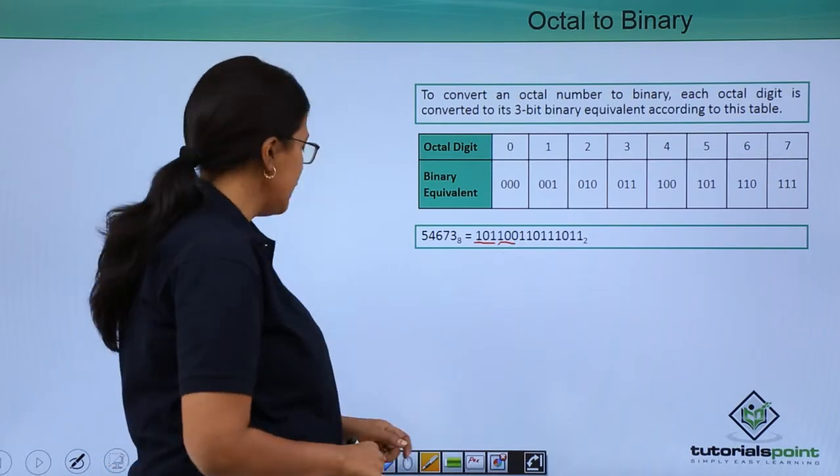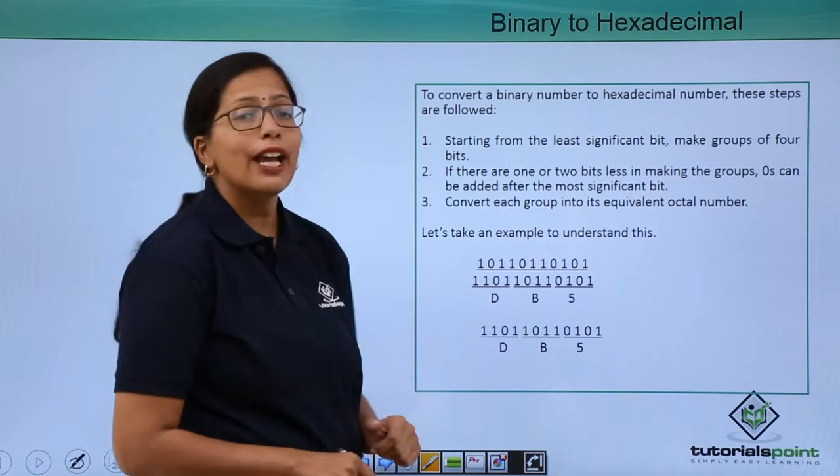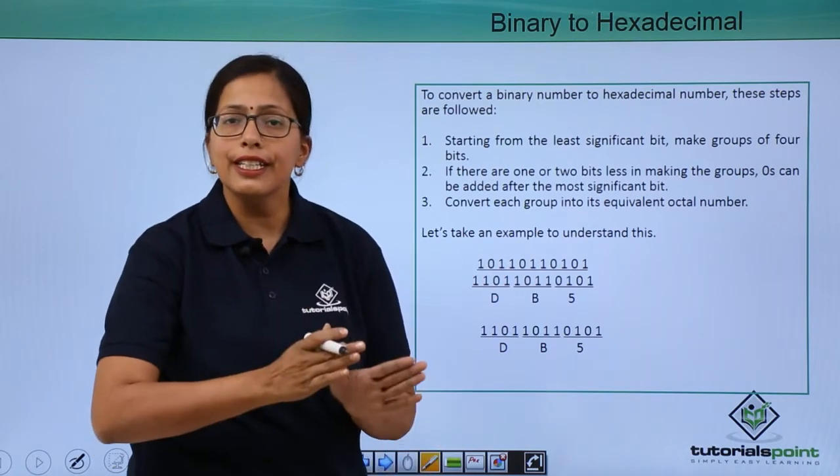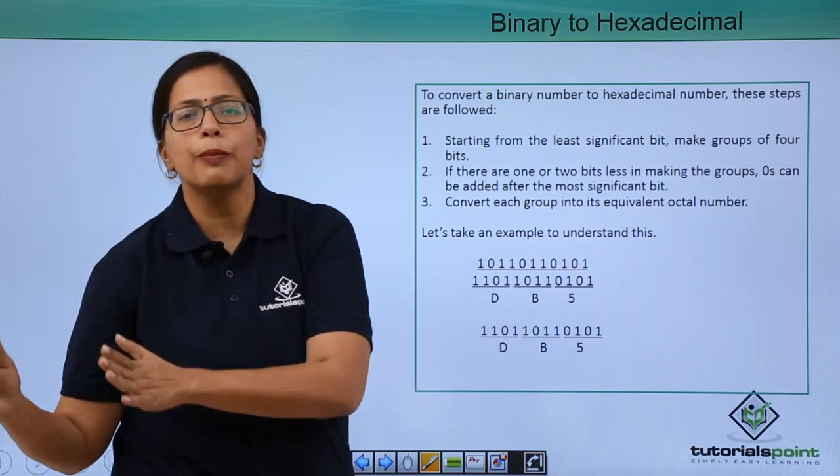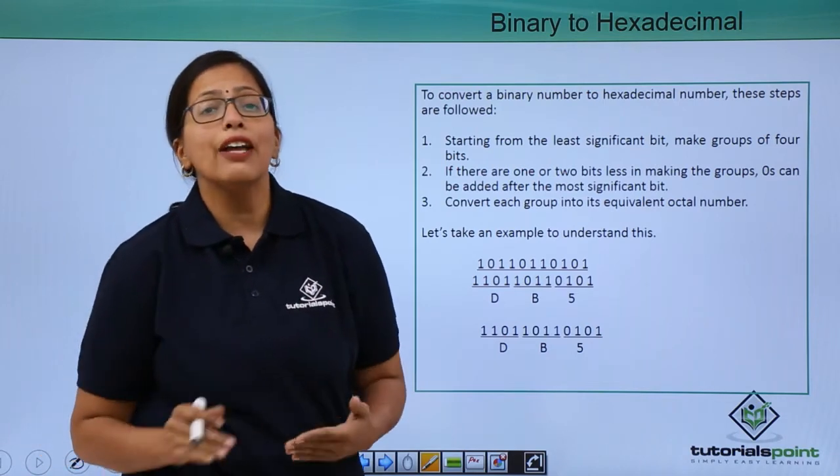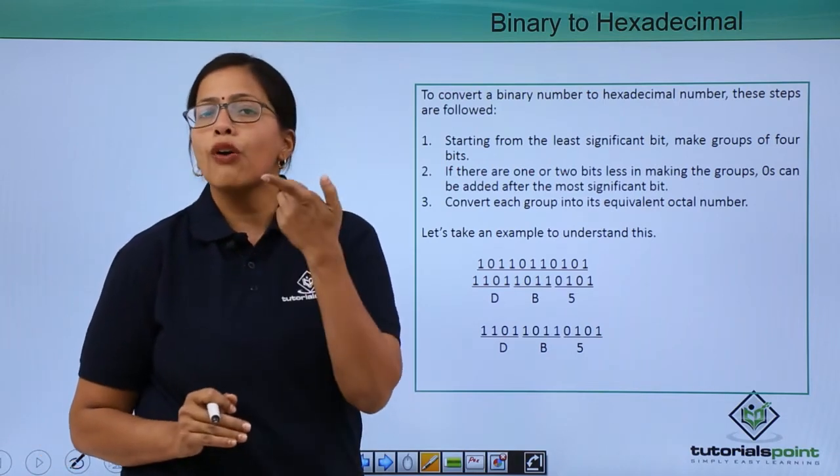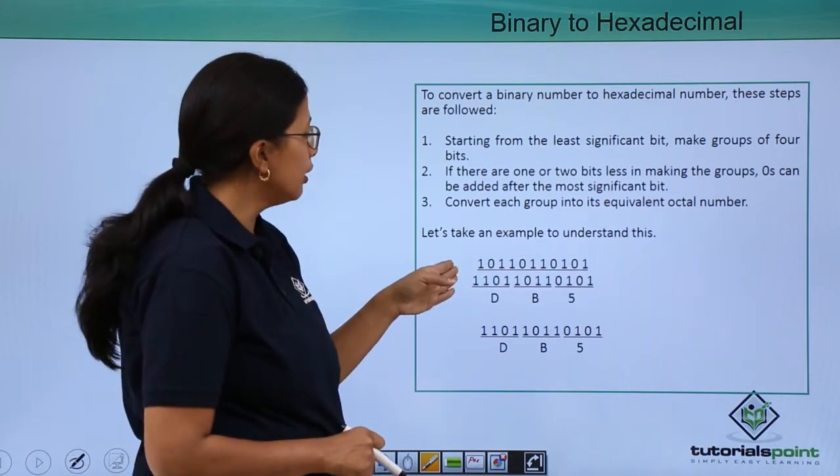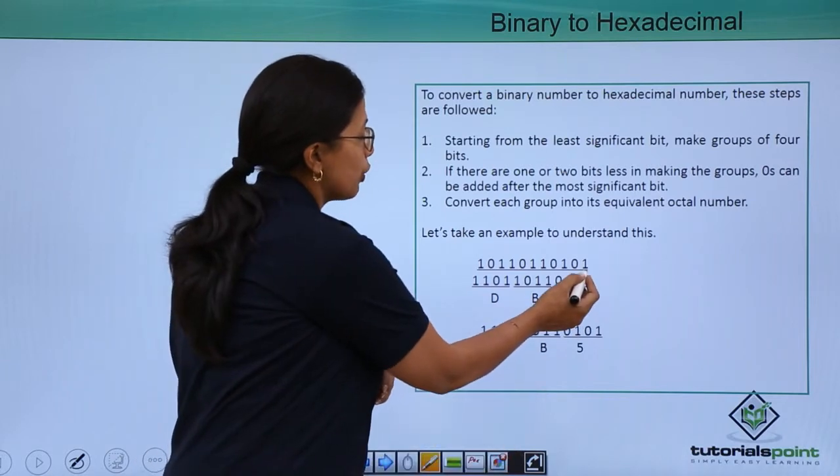Next, let's see how we can convert a binary to hexadecimal. Here again, you need to remember that 16 is equal to 2 to the power of 4. So, I will be making groups of 4 bits. This is a number that I have taken here and I have made groups of 4 out of this.